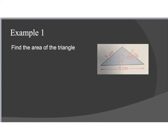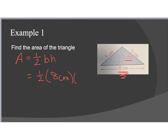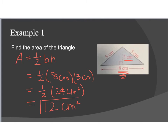So let's go ahead and see how this applies. For example one, find the area of the triangle. The area of our triangle is equal to one half times the base times the height. The one half stays the same. My base in this case is eight centimeters, and my height is three centimeters. So I end up with one half times 24 centimeters squared, and half of 24 is 12. Because we are dealing with area, the units have to be squared.